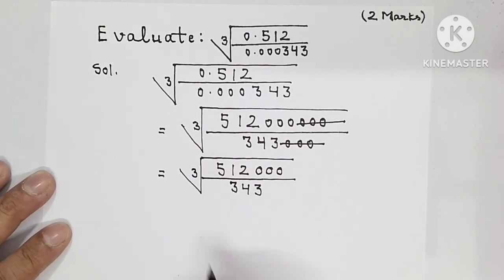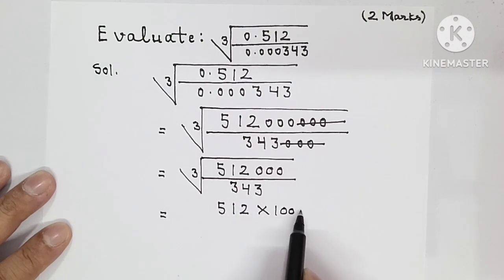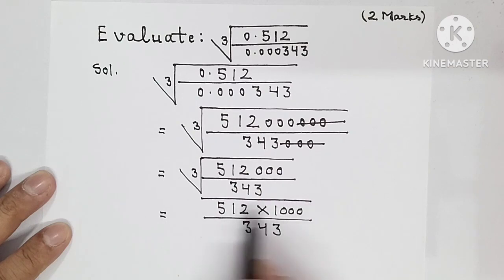Right. So it can be written as the cube root of 512 times 1000 upon 343.